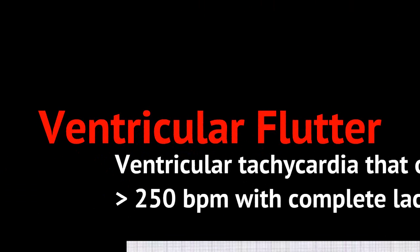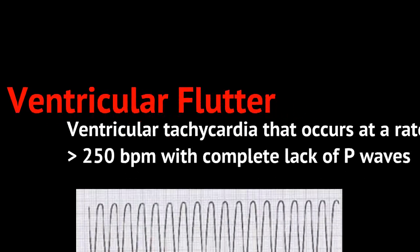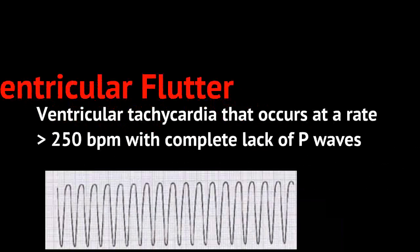Ventricular flutter is a type of ventricular tachycardia that occurs at a rate greater than 250 beats per minute. You'll notice there are no P waves, and it looks like large QRS complexes that appear identical and regular going across the EKG.